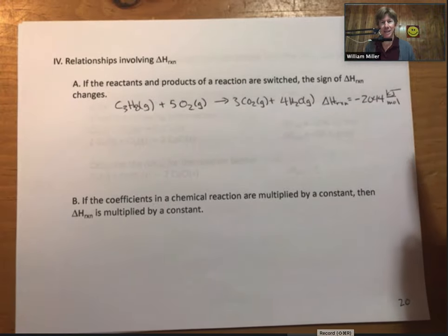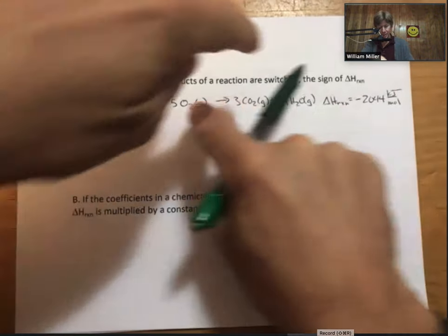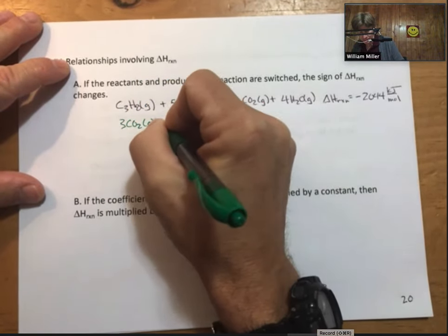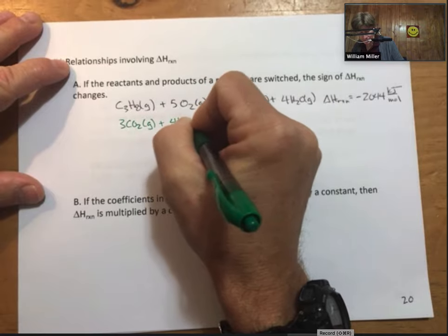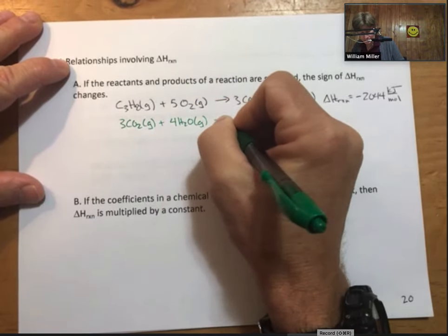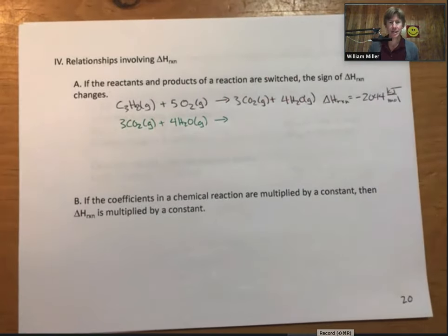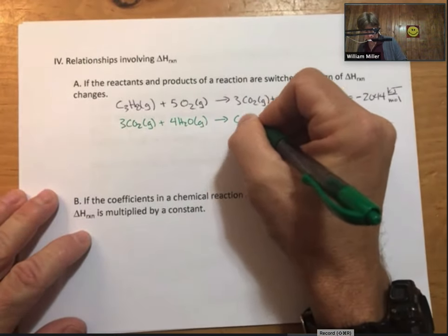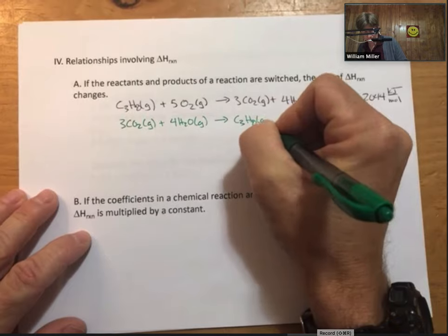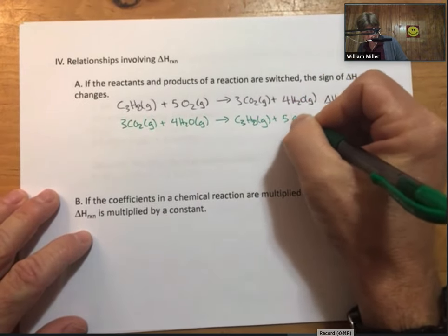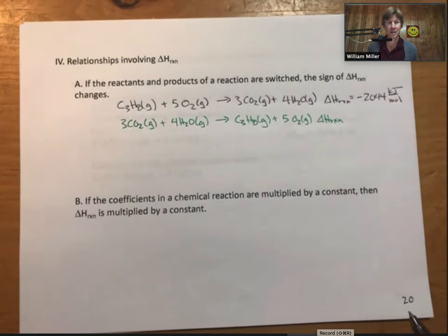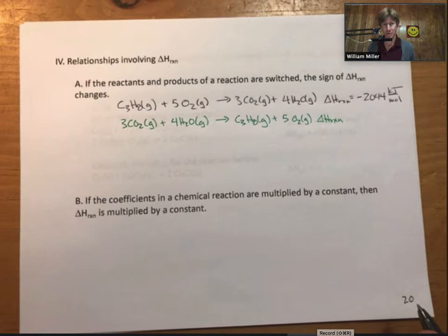And according to A, if we flip the reactants and products, we get propane and 5 moles of oxygen as products now. So we've flipped or reversed the reaction.